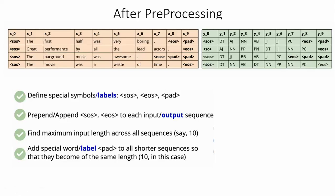I will explain clearly how it is going to perform. For example, we add SOS — start of the sentence — then 'the first half was very boring.' Here 'the' represents a determiner, that's why DT; 'first' represents adjective, AJ; 'half' represents noun; 'was' represents verb; 'very' is also one type of adjective, JJ; 'boring' also represents a special adjective type. A dot will represent PC — punctuations. And because there are empty spaces, we are not leaving them empty; we have to cover all the sequences, including shorter sequences.